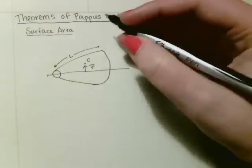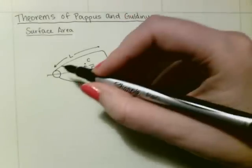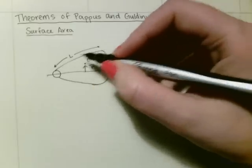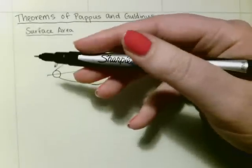So what this theorem allows you to do, which is really pretty cool, it allows you to take this line and determine the surface area by rotating it around the axes.